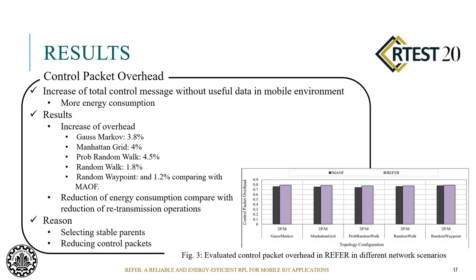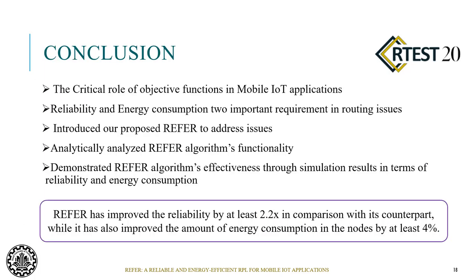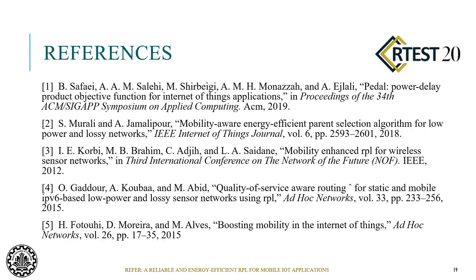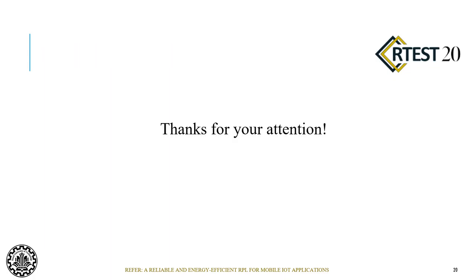In this objective function, there are negligible amounts of additional packet overhead to the network due to selecting stable parents and reducing control packets. To summarize, we have shown the critical role of objective functions in mobile IoT applications. Reliability and energy consumption are two important requirements in routing, and Prefair addresses both. The results demonstrate Prefair's effectiveness in terms of reliability and energy consumption. Thanks for your attention.